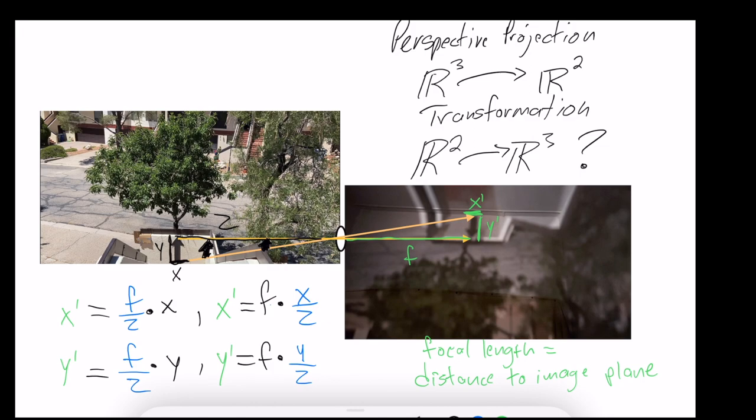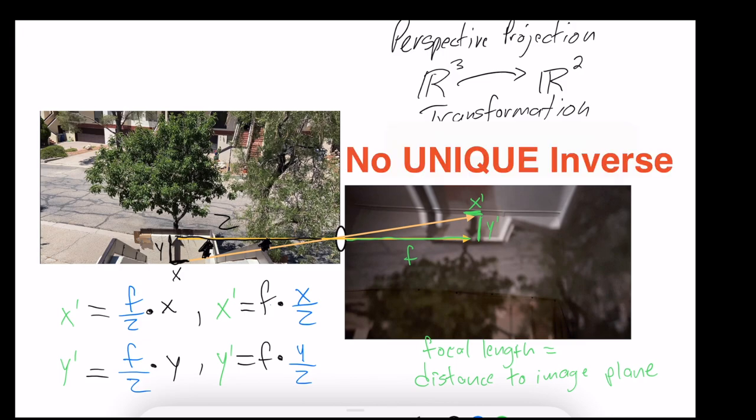Only knowing that projected arrow inside our screen, we cannot know what size arrow and what distance that arrow was from the screen. So this transformation has no unique inverse because that information is lost, and many different configurations of arrow sizes and distance Z can give us the same image.